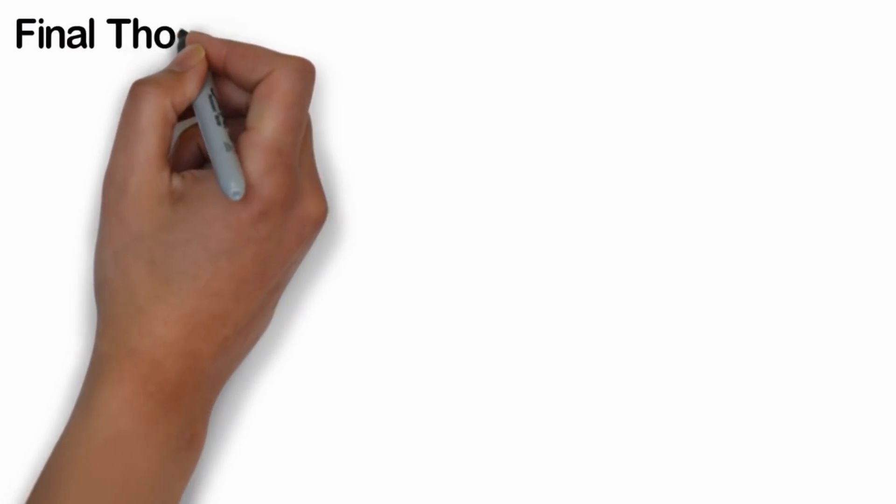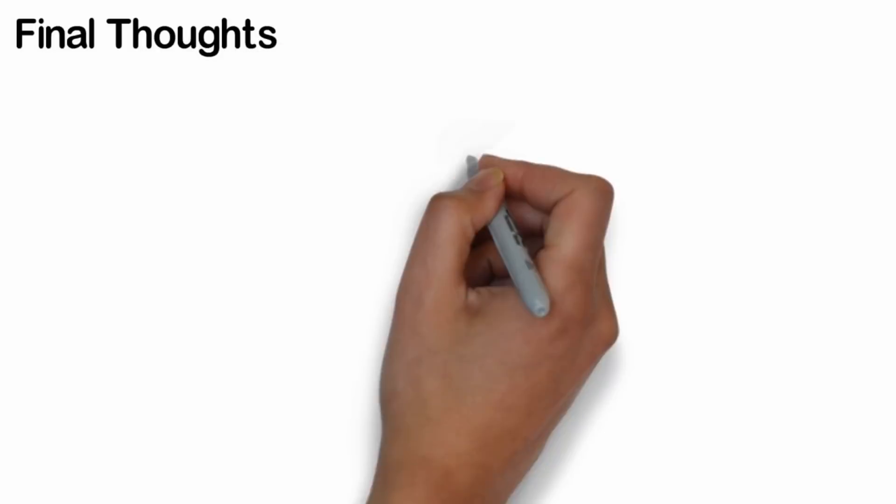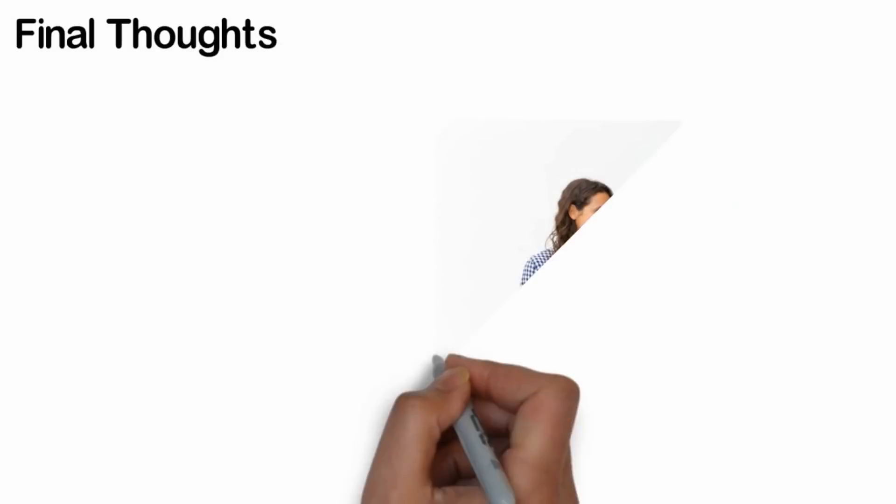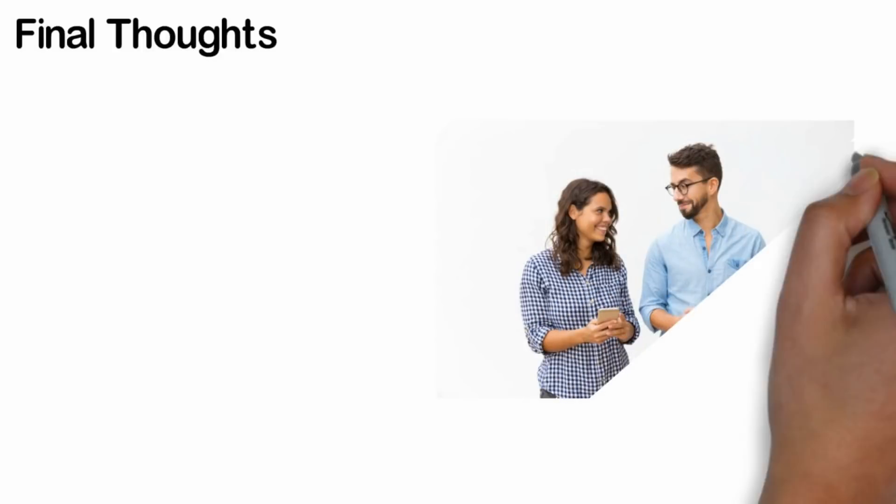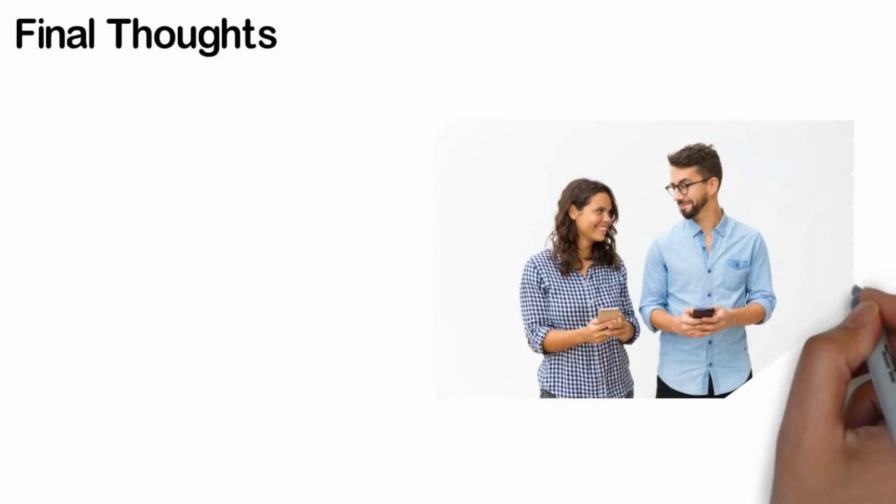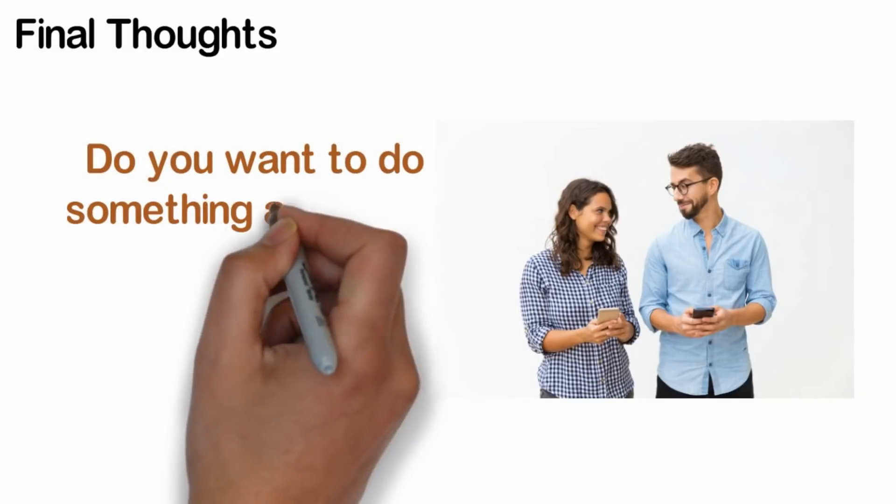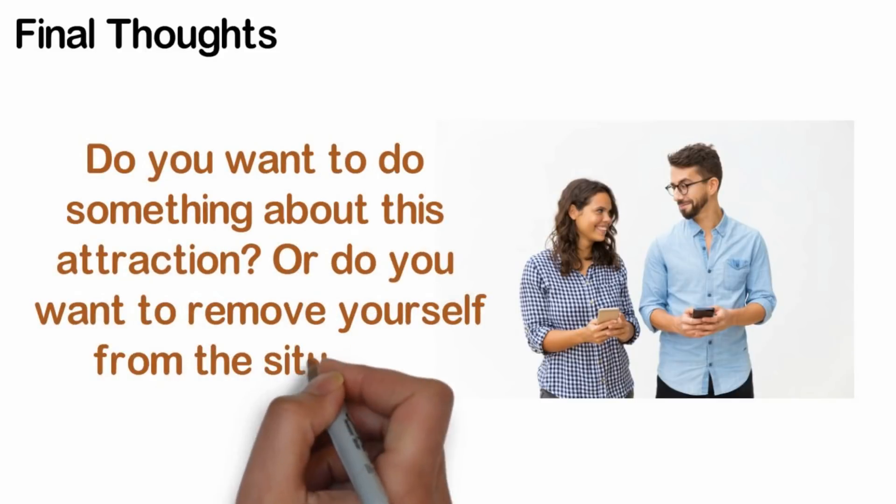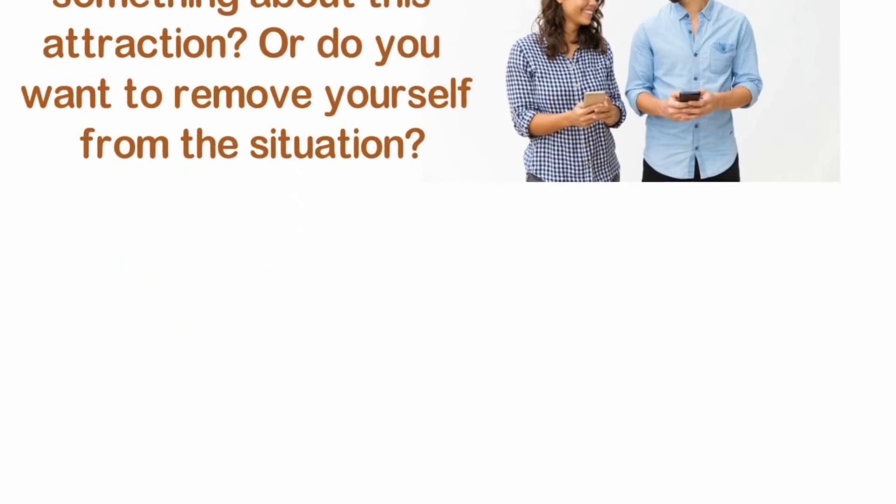Final thoughts. Ultimately, the biggest hint you could have when the other person is into you is how she acts around her husband in relation to you. Hiding you from her husband certainly gives her interests away. If all the other signs match, then you will know for certain. Then, the decision is on you. Do you want to do something about this attraction? Or do you want to remove yourself from this situation?